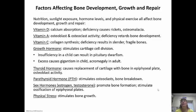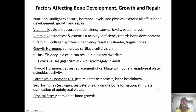Vitamin D is required for calcium absorption. A deficiency causes rickets in children and osteomalacia in adults. Our skin makes an inactive form of vitamin D, but you need sunlight to get that process going. Then it goes to the liver to become activated so you can absorb calcium. If you ever take a calcium supplement, you'll notice it often includes vitamin D, because you need that vitamin D to actually absorb the calcium.